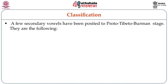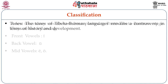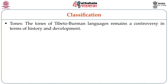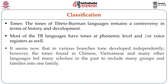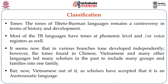A few secondary vowels have been posited for the Proto-Tibeto-Burman stage: front vowels E, back vowels O, mid vowels A and O. The tones of the Tibeto-Burman languages remain a controversy in terms of history and development. Most Tibeto-Burman languages have tones at the phonemic level or voice registers as well. It seems that in various branches tone developed independently. However, the tones found in Chinese, Vietnamese and many other languages led many scholars in the past to include many groups and families into one family. But now Vietnamese is out of it, as scholars have accepted that it is an Austro-Asiatic language.